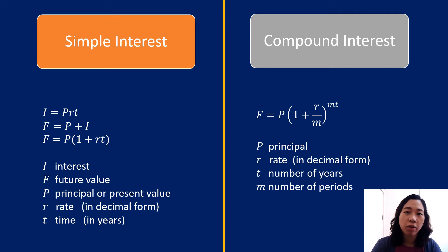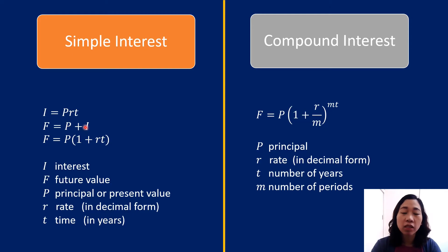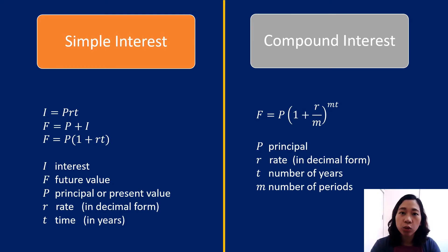Okay, so let us recall first our formulas for simple interest and compound interest. For simple interest, the interest is given by the principal times the rate R times the time, and this is always in years. The future value of the money is equal to the principal amount plus the interest or income that you earn, which can also be written as principal times 1 plus RT. For compound interest, the formula is the principal times 1 plus R over M, where R is the rate and M is the number of periods, raised to M times T, the number of years.